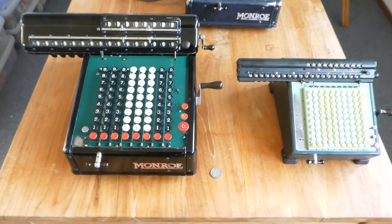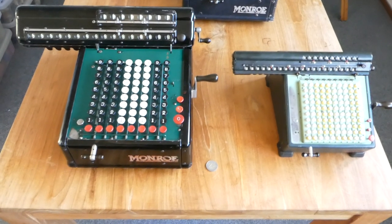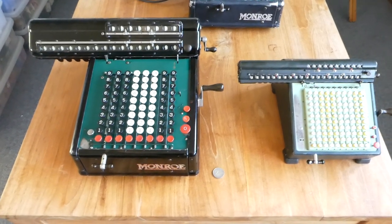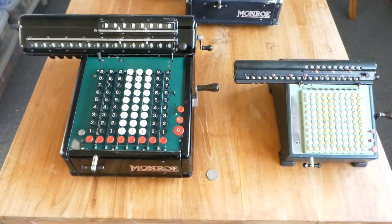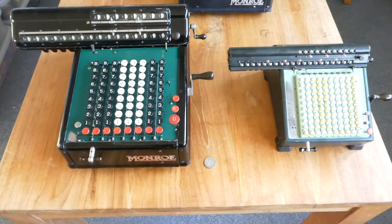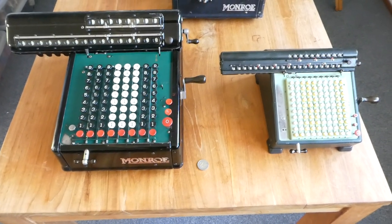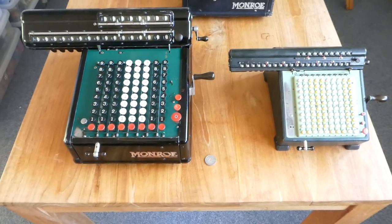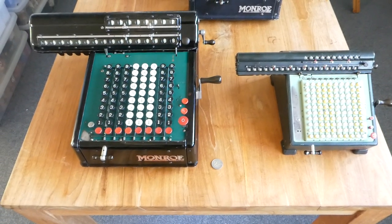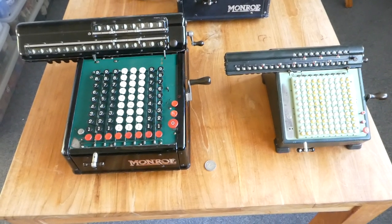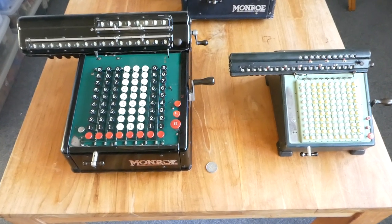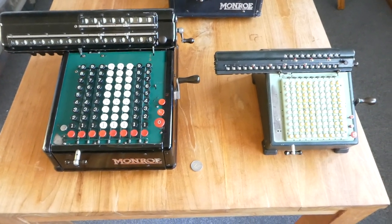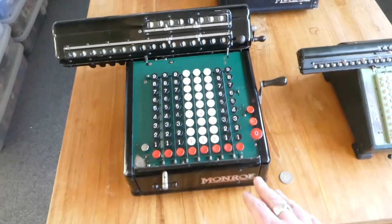The first machine that Monroe released was the Model D. The previous models were only made in a handful of numbers and I don't think any of them survive today. But Model D was the first one that was mass-produced. Still, they didn't make that many and they are very rare today. The success really took off with the Model K that was released in 1921, and the one here on the left is a Model K.